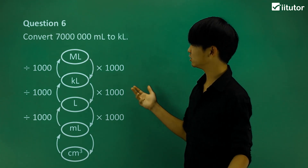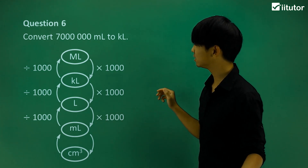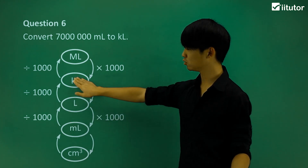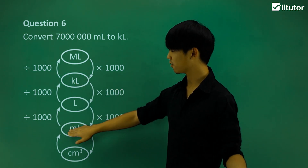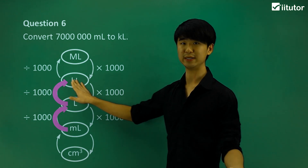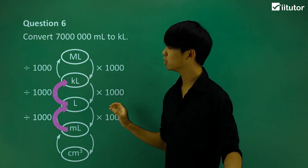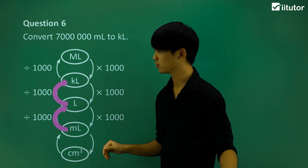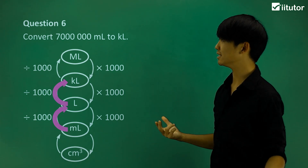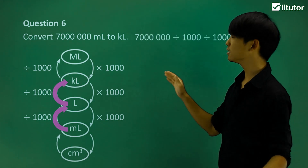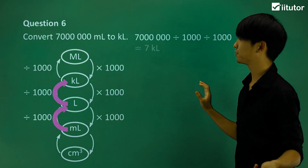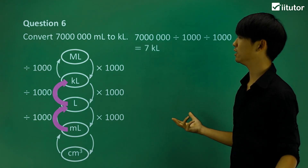Starting from question six, we're converting from milliliters to kiloliters — that's a jump of two steps up. To do so, we convert from milliliters to liters, and then from liters to kiloliters, which means we divide by 1,000 two times. So 7,000,000 milliliters divided by 1,000, divided by another 1,000, gives us simply 7 kiloliters.